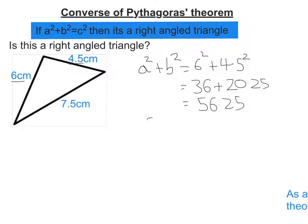Now, we're hoping that if we take the longest side, C, which is 7.5, and square that, we should get the same. And in this case, we do, we get 56.25.